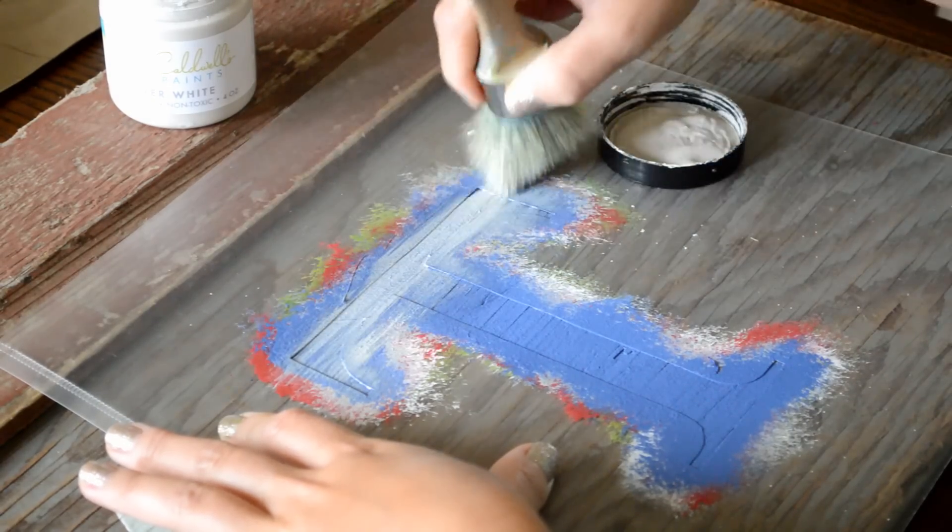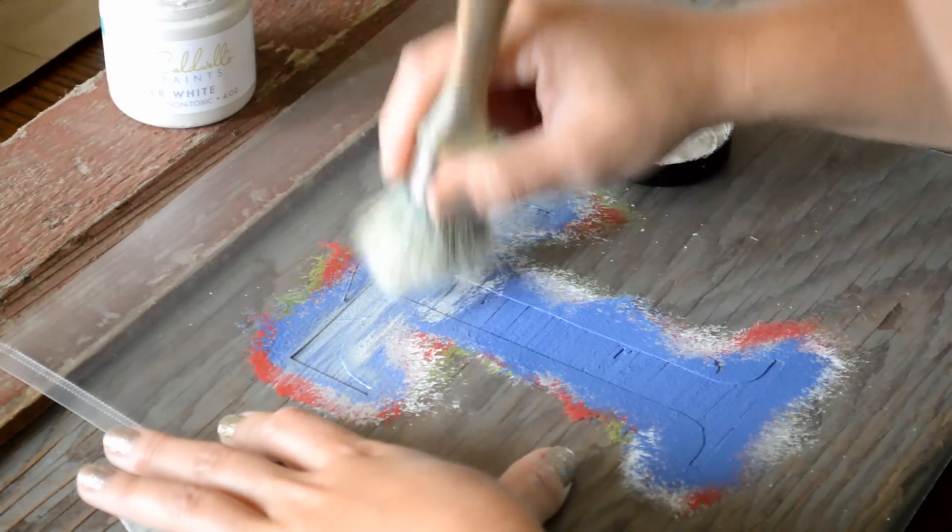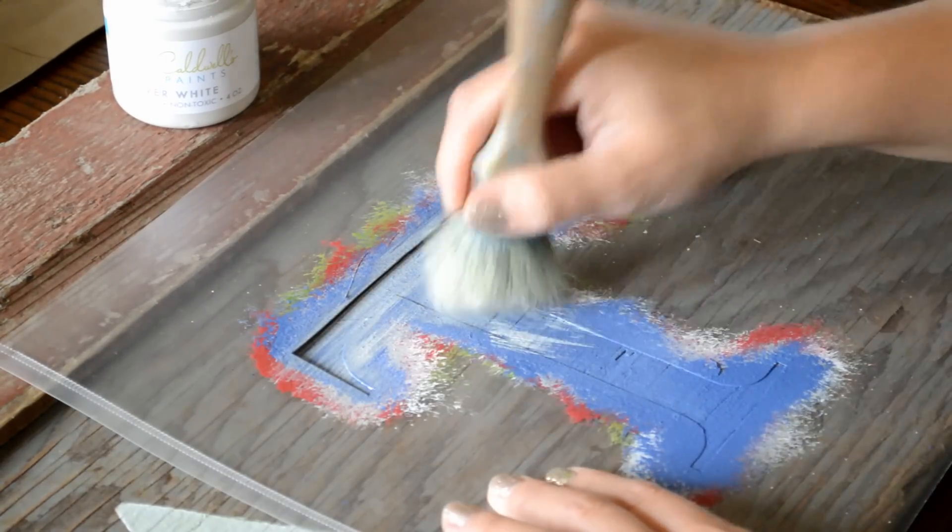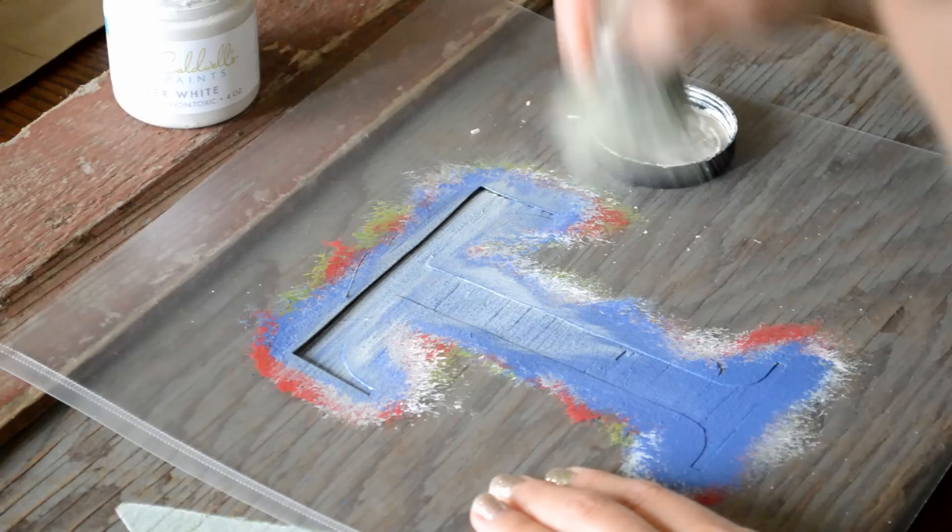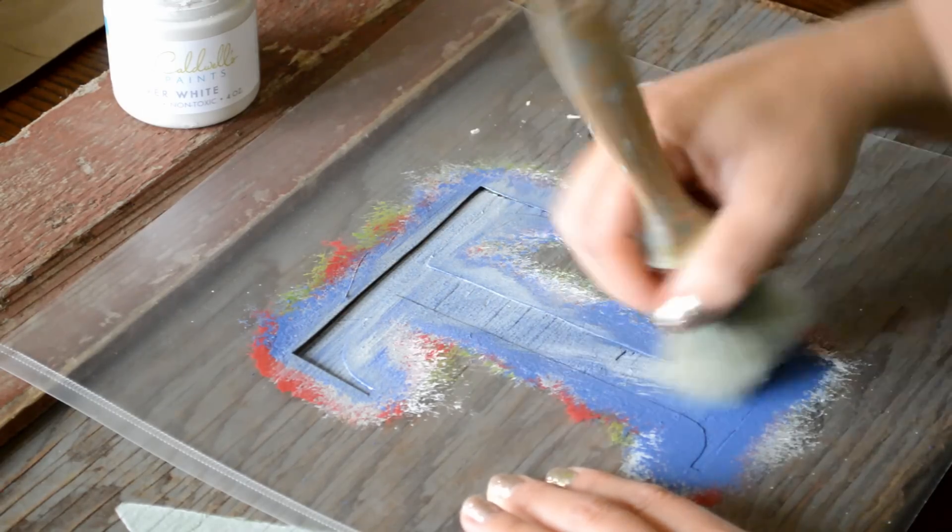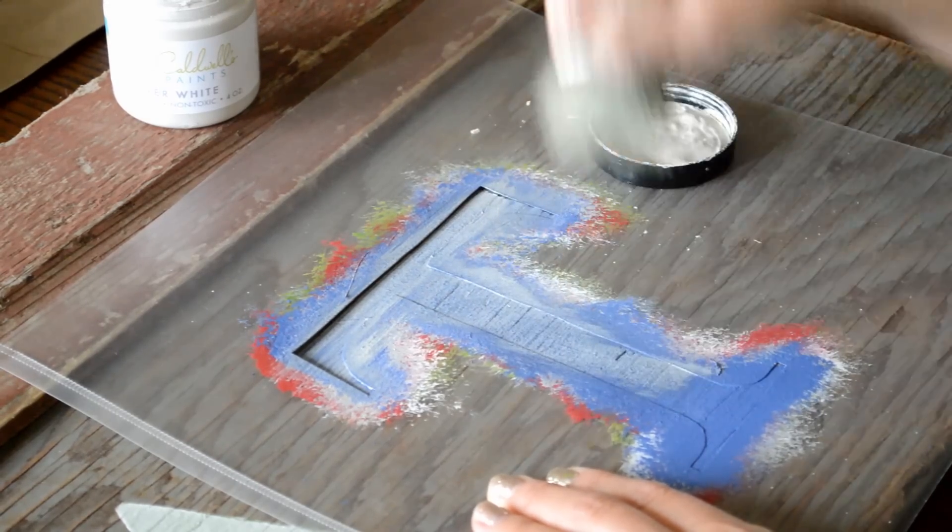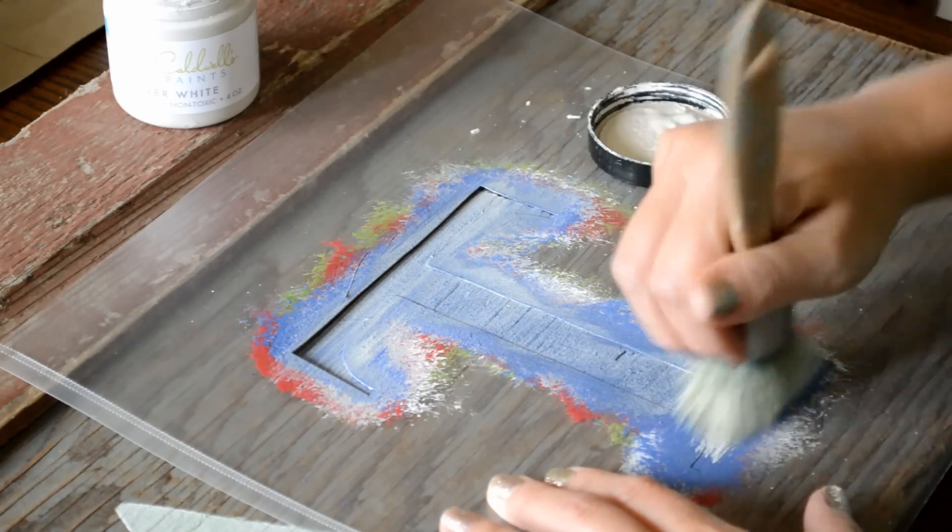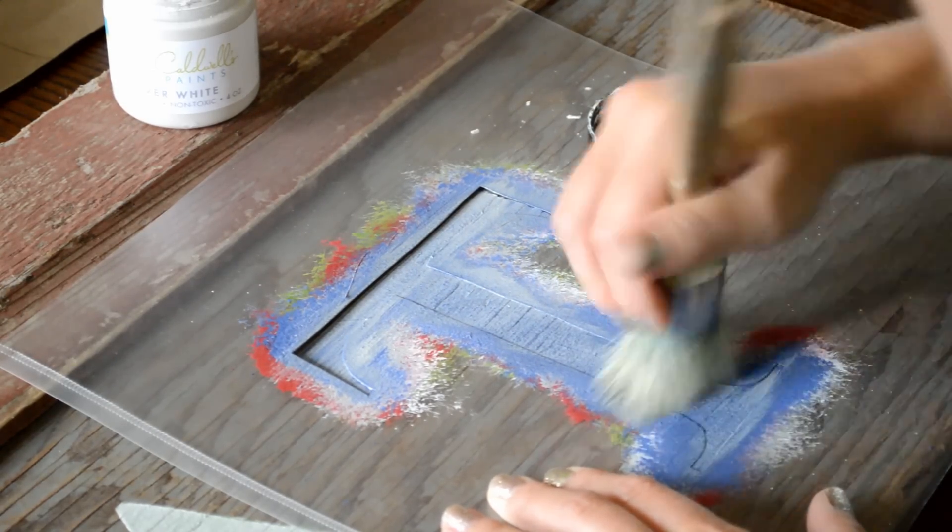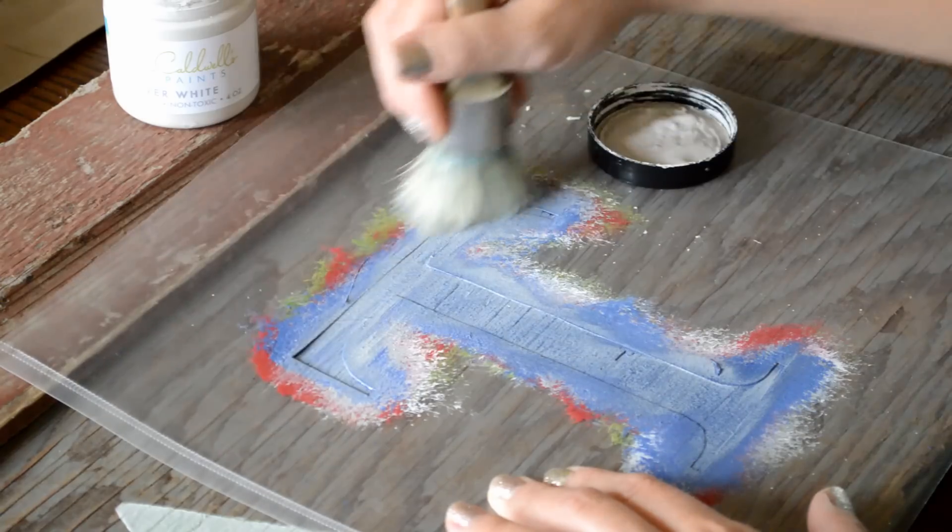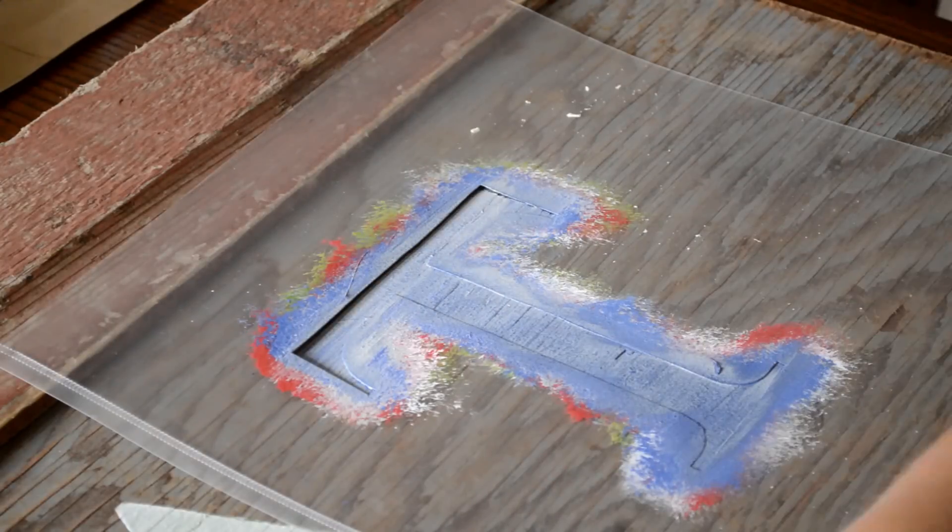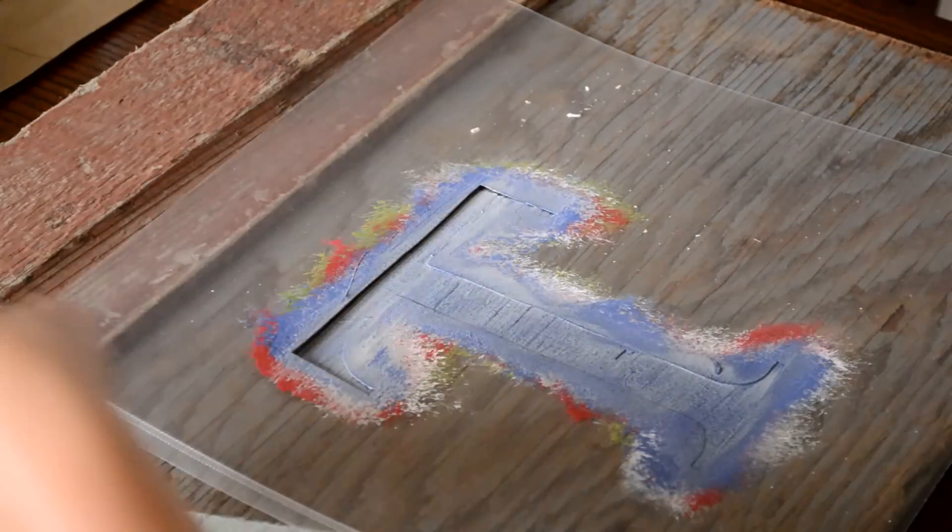Once this dries, you'll still be able to see the blue underneath it. You don't want to put a wash on too thickly because then it defeats the purpose of a wash altogether, and you won't be able to sand it off very easy. Alright, so that's it for the wash. That's my last step. I'm going to let that dry, and then I will get to sanding the letters.